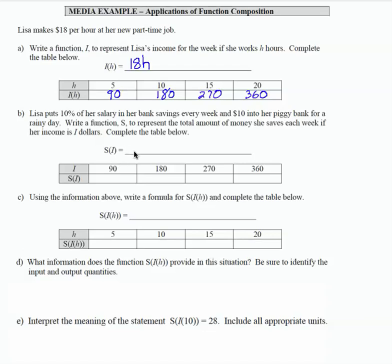So let's take a look at how we would set that up. If she saves 10% of her salary, which is really 10% of her income, same thing, we would take .10I, that's 10% each week of whatever she brings in, plus $10. So that is how we would write a function for S of I. S represents how much she saves based upon her income every week.